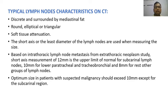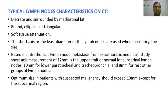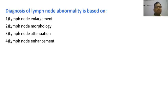The aims and objectives of the study are to determine the efficacy of MDCT in the characterization of mediastinal and hilar lymph nodes as benign or malignant, and to correlate MDCT findings with histopathology. Typical lymph node characteristics on CT: they are discrete and surrounded by mediastinal fat, round, elliptical, or triangular in shape, with soft tissue attenuation. The short axis diameter is used when measuring size — 12 mm is the upper limit of normal for subcarinal lymph nodes, 10 mm for lower paratracheal and tracheobronchial lymph nodes, and 8 mm for the rest.